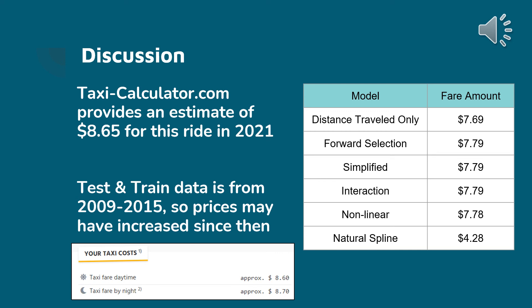Continuing our discussion on New York City taxi fare predictions, we used taxcalculator.com to predict our sample data point and estimated it would be $8.65 for this ride. As you can see in the table to the right, we have all of our models and the fare amount each model predicted for the sample data point. One thing to note is that our data is from 2009 to 2015, so taxi prices may have increased since then.